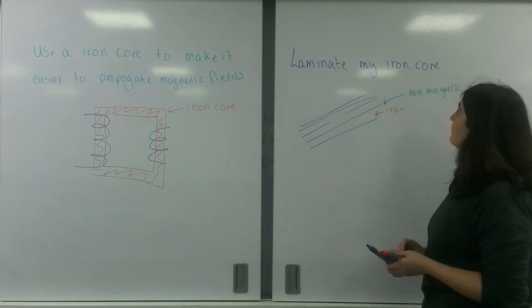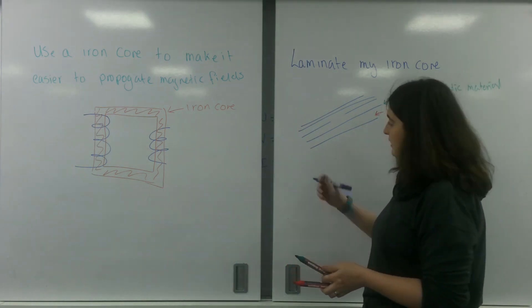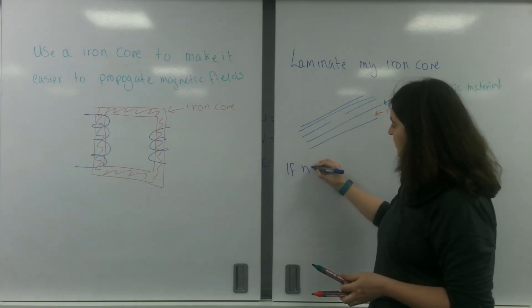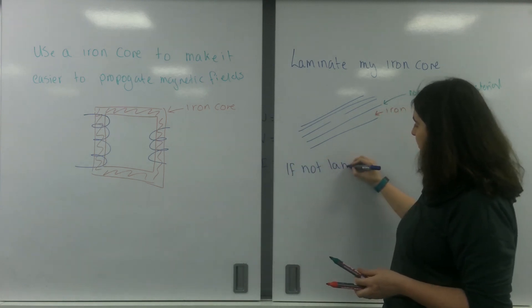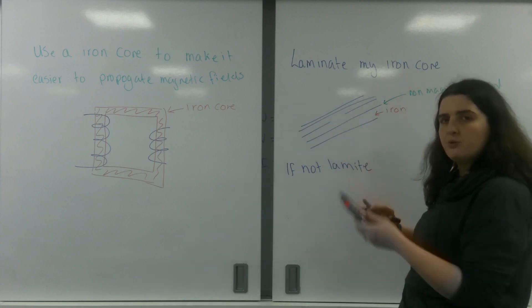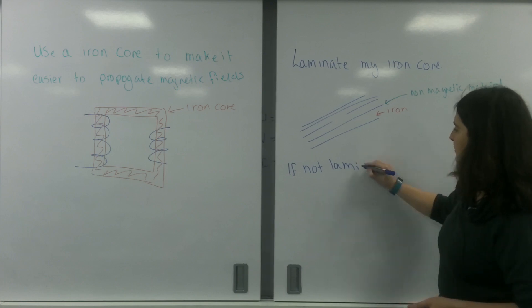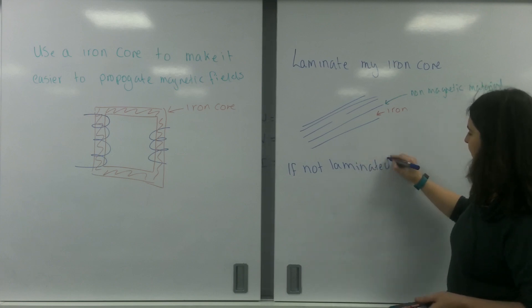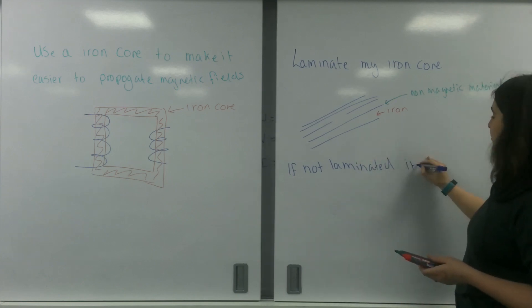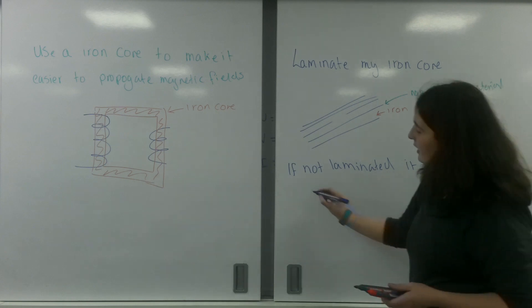If not laminated, these lines that I showed you before that are going off in all sorts of directions can cause something called eddy currents in the core.